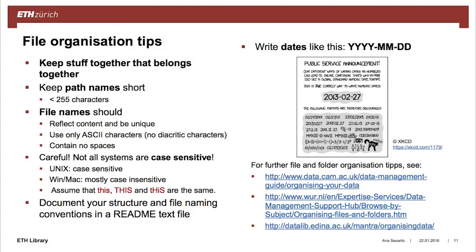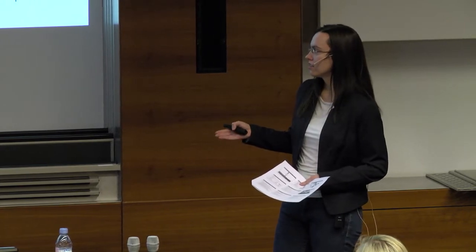Also, try to use only ASCII characters and no special characters with diacritics — depending on encoding, especially when changing operating systems, for example encoding something on a Mac and sending it to a colleague on Windows, you may not be able to read it anymore. Also, make sure file names are not case-dependent. A simple and effective tip: document your structure and file naming conventions in a readme text file, so a new student in your group can see how file names are written for a certain experiment.